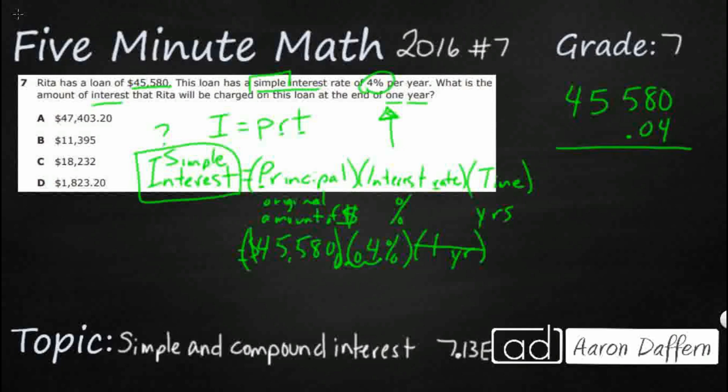So 4 times 0 is 0 here. 4 times 8, 32. 5 times 4 is 20. Add the 3 is 23. 5 times 4 is another 20. Add the 2 is 22.